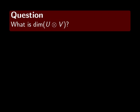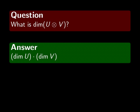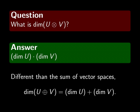Now, here's another question. What's the dimension of U tensor V? The answer is that it's the product of the dimensions of U and V. And this really is different than the sum of vector spaces. When you take the Cartesian product or the sum of vector spaces, the dimensions add. The dimension of U plus V is the dimension of U plus the dimension of V. So the tensor product is really a more complicated beast. For example, the tensor product of R3 with R3 is 9-dimensional, not 6-dimensional.